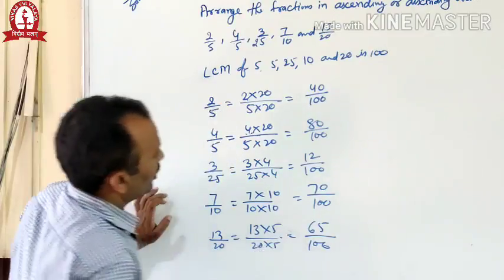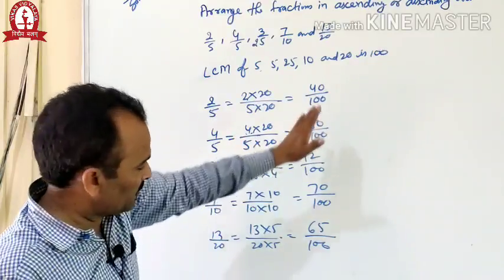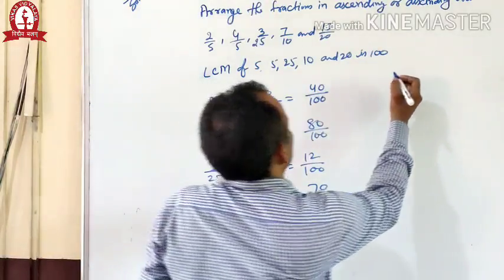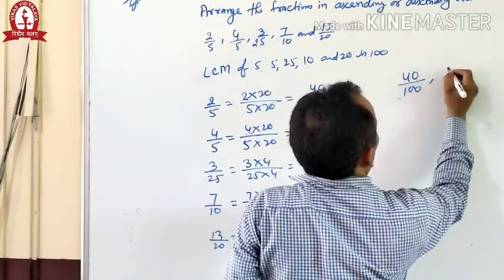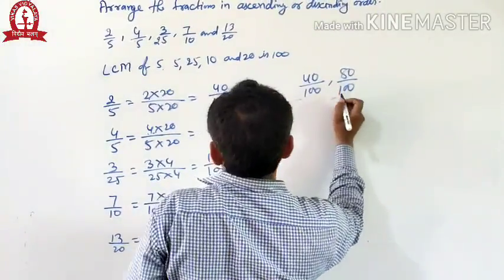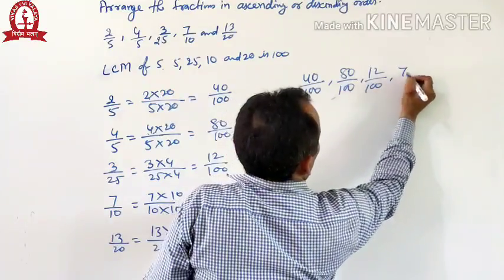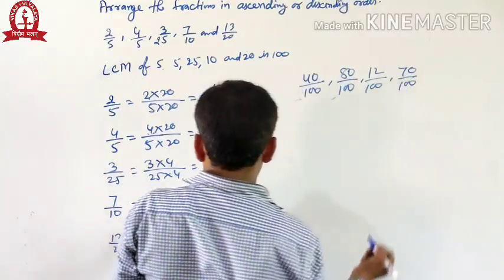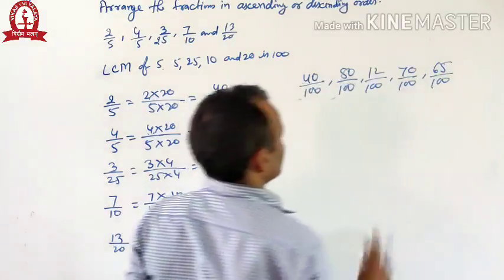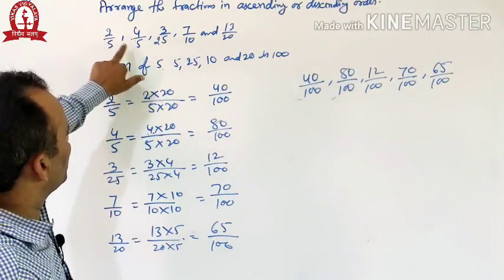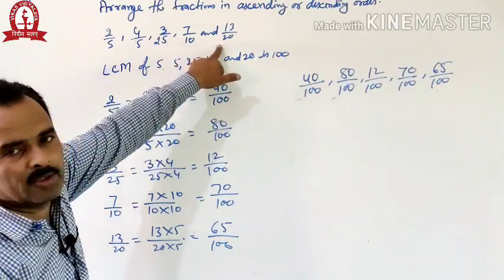We observe all the equivalent fractions have the same denominator, meaning these fractions are like fractions. The equivalent fractions are: 40 by 100, 80 by 100, 12 by 100, 70 by 100, and 65 by 100. These are the equivalents of 2 by 5, 4 by 5, 3 by 25, 7 by 10, and 13 by 20.